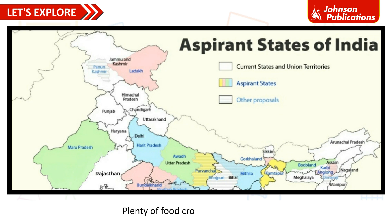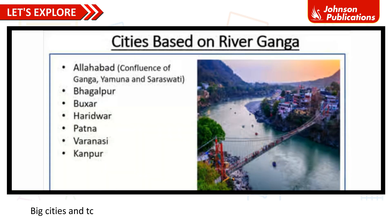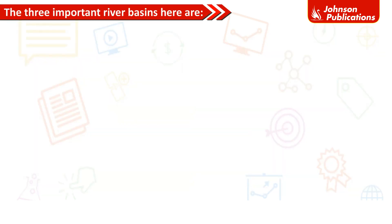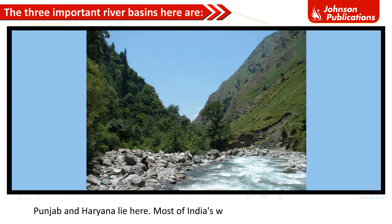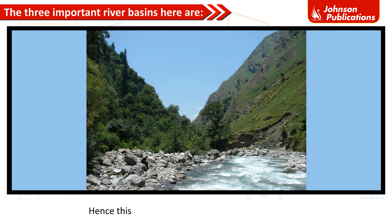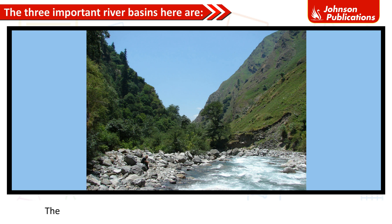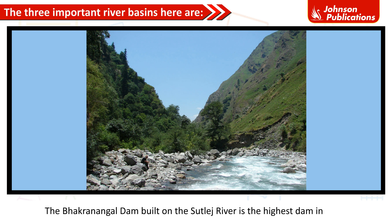Plenty of food crops are grown in the Northern Plains. Big cities and towns are situated along the banks of the rivers Ganga and Yamuna. Punjab and Haryana lie in the Satlaj River Basin. Most of India's wheat comes from the Satlaj Basin, which is why it is called the Wheat Basket of India. The Bhakra Nangal Dam, built on the Satlaj River, is the highest dam in India.